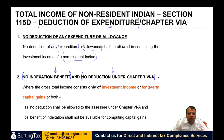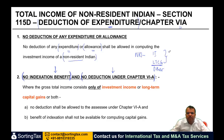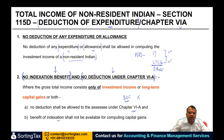Where the gross total income consists only of investment income, or long-term capital gain, or both — an NRI's income can consist of investment income, long-term capital gain covered in this section, and any other third income. If an NRI's income consists only of these two — investment income and long-term capital gain covered in this section — then no deduction shall be allowed under Chapter 6A. Chapter 6A deductions like section 80C and others will not be available. And the benefit of indexation shall not be available for computing capital gains. If you have a long-term capital gain, normally indexation comes to mind, but where an NRI is claiming benefit under this chapter, the indexation benefit will not be available.